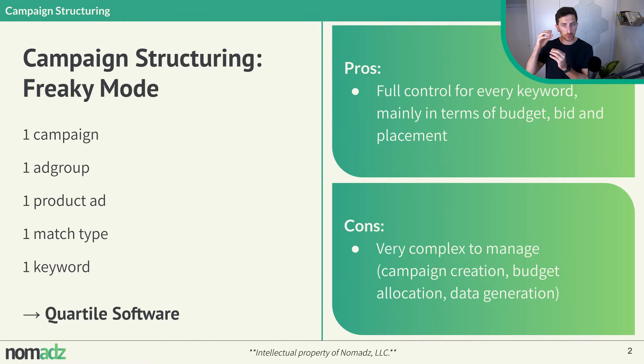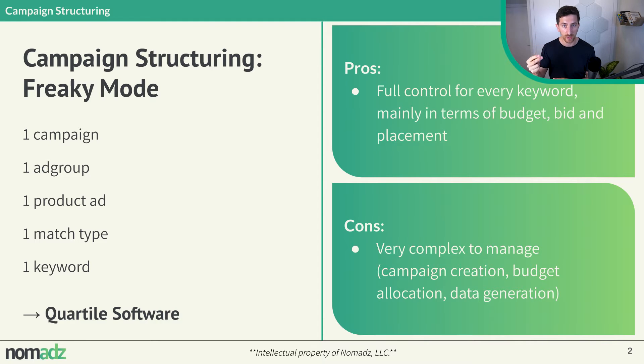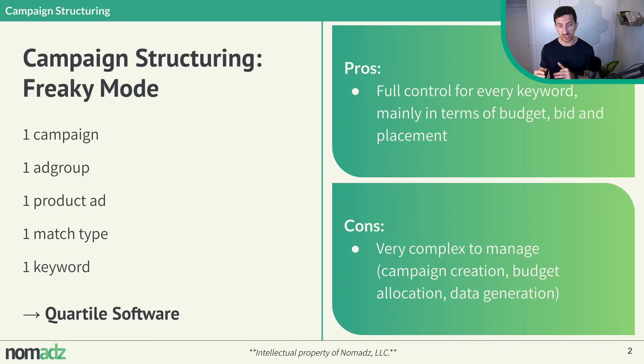You know what the placement performance is for each keyword. You can see that for this keyword, top of search is performing well, for product page not well, and rest of search is performing quite well. So you can make some optimization based on that.